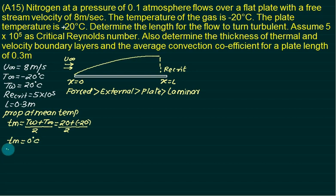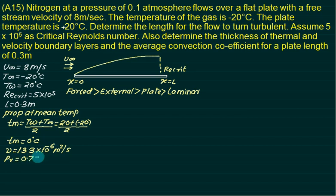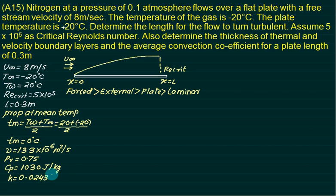At 0°C, collect air properties from the table. Kinematic viscosity nu = 13.3 × 10⁻⁶ m²/s. Prandtl number Pr = 0.75. Specific heat cp = 1030 J/kg·K. Thermal conductivity k = 0.0243 W/m·K, which is required for the Nusselt number calculation.